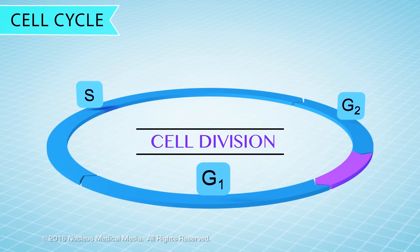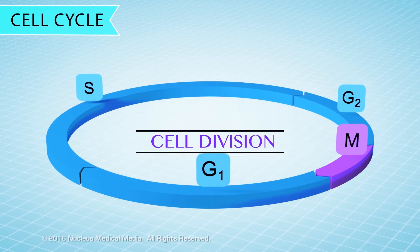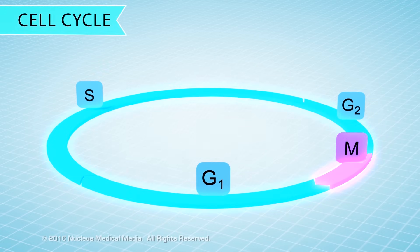Interphase is followed by cell division, which has one phase, the M phase. Together, these four phases make up the entire cell cycle.